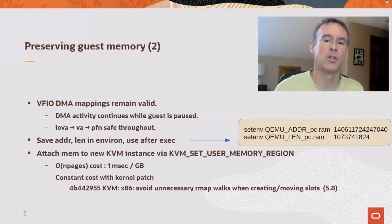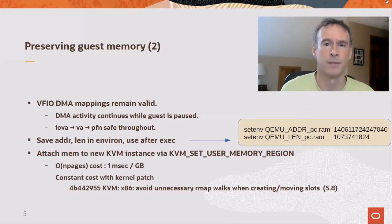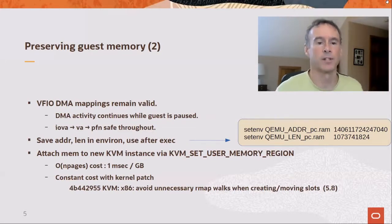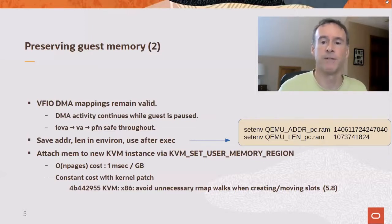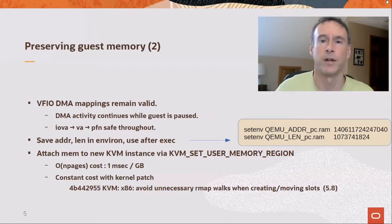After exec, QEMU looks for variables of this form and retrieves the address. The address is attached to the new KVM instance via the set memory region ioctl. The first time we did this, we were surprised to find that the ioctl time rose linearly with page count, adding hundreds of milliseconds for larger memories. Anthony investigated and found it to be an accident of the implementation, easily fixed. He eliminated the linear cost with a kernel patch available in kernel 5.8.